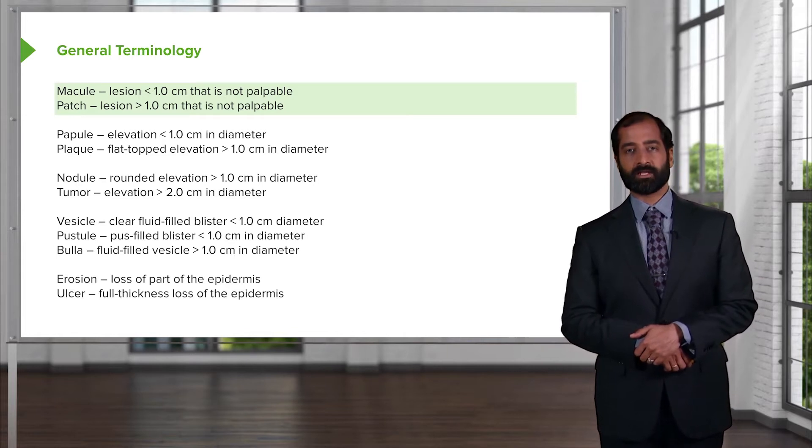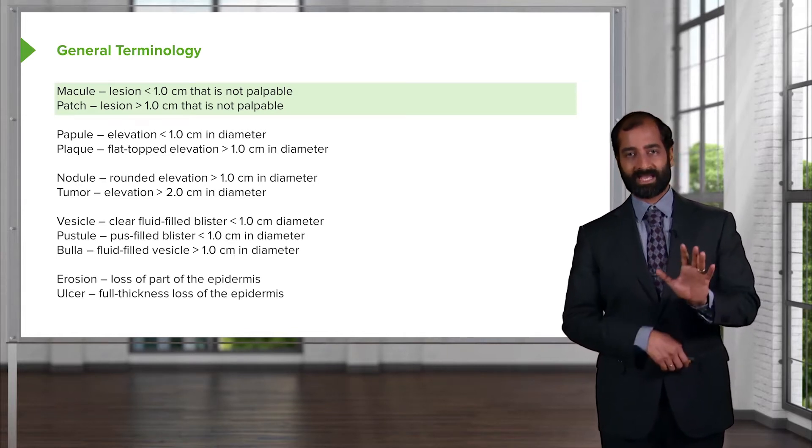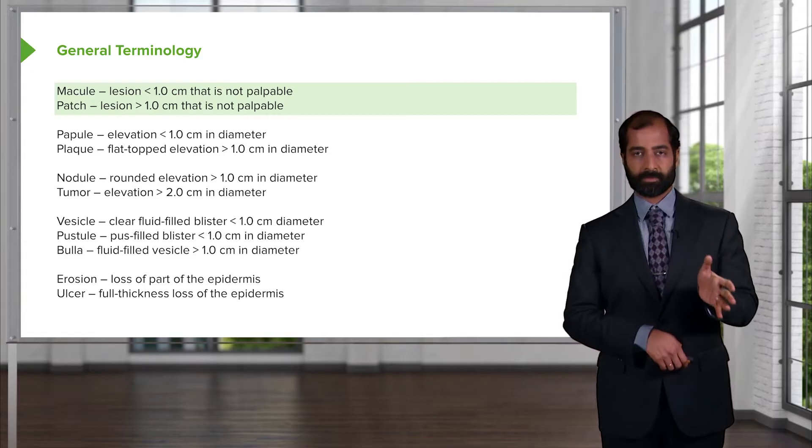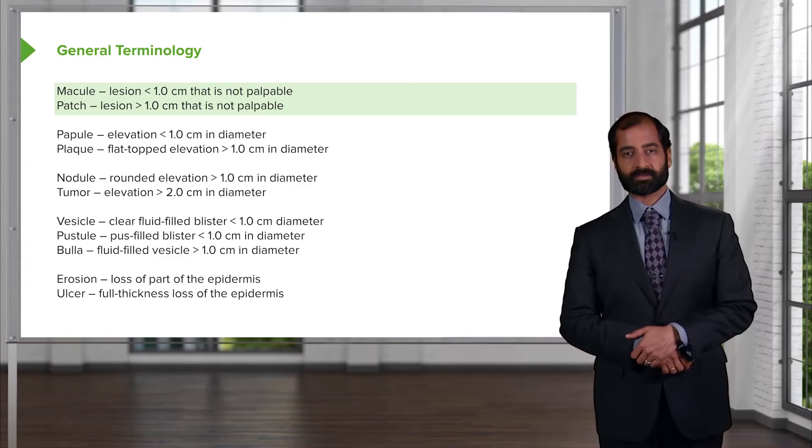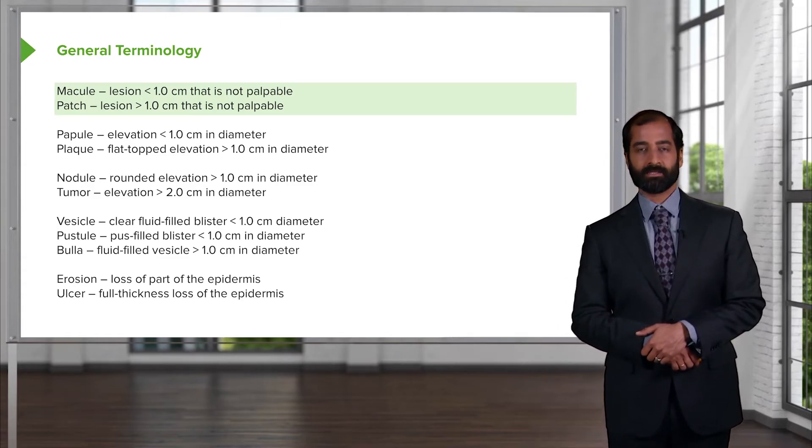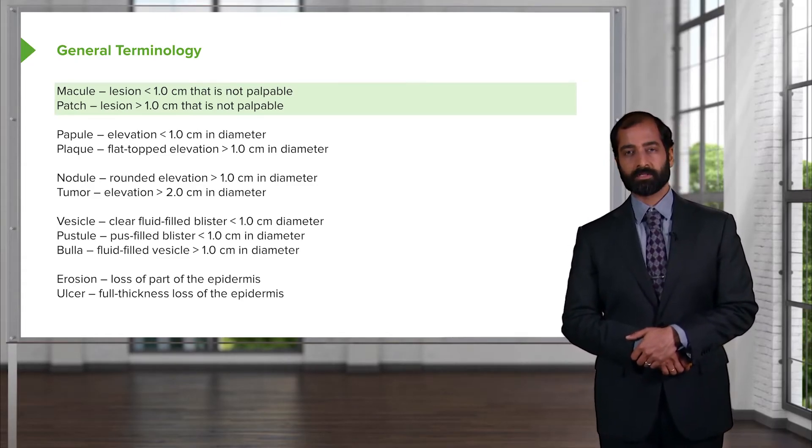For example, if it's a macule, you cannot feel this. So therefore, you place your hand on the macule. For example, cafe au lait spot is a macule. It's mocha colored. By definition, less than one centimeter, that is not palpable. That is the most important topic.